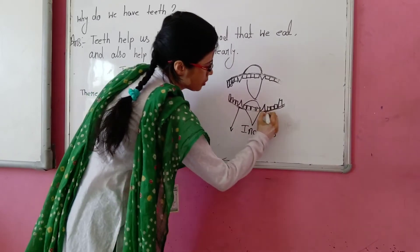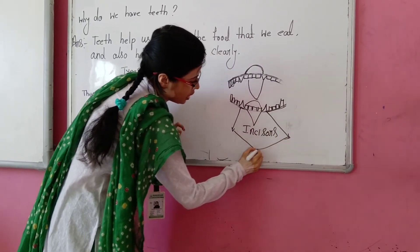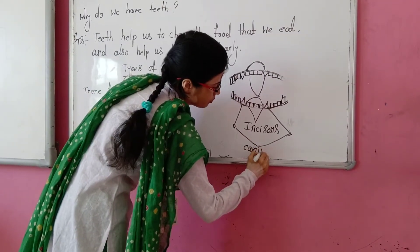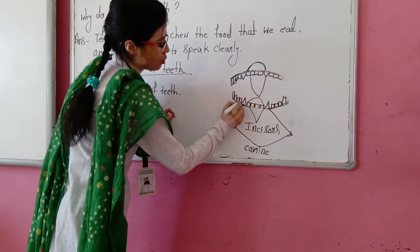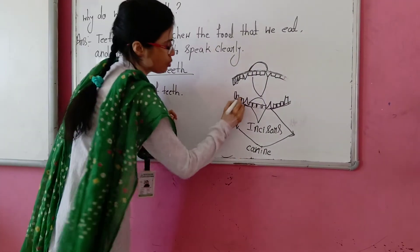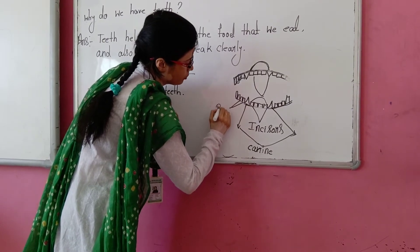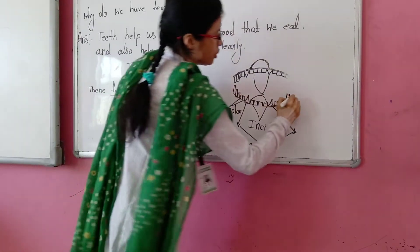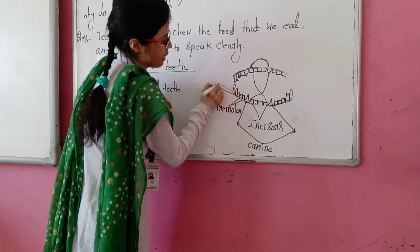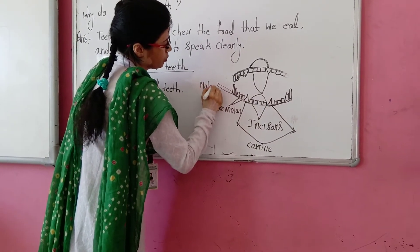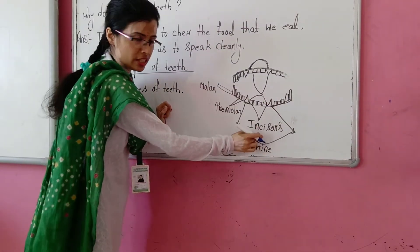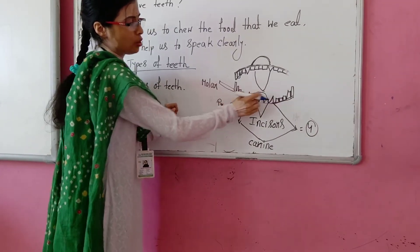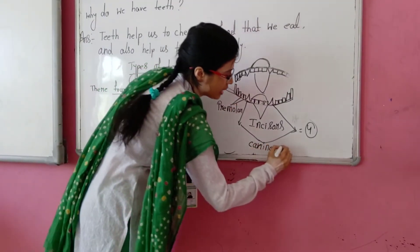Next, the sharp teeth just beside the incisors are called canine. There are two canines. Next, the two teeth beside the canine are called premolar. And the last three sets of teeth are called molar.